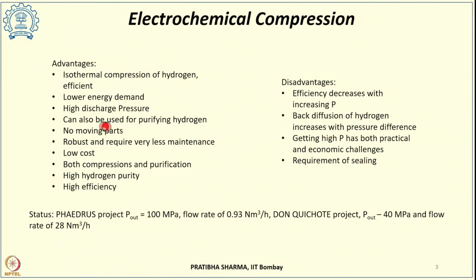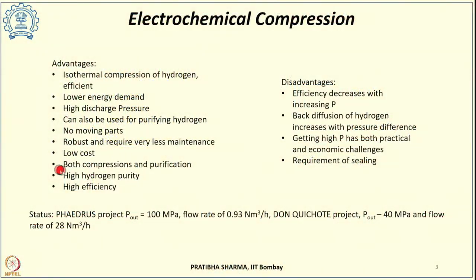These electrochemical compressors can be used for both compression as well as purification. We can separate out hydrogen from a mixture of gases, as the membrane used is a proton conducting membrane — only protons permeate through the membrane and recombine on the cathode side, separating hydrogen from the gas mixture to yield high purity hydrogen.